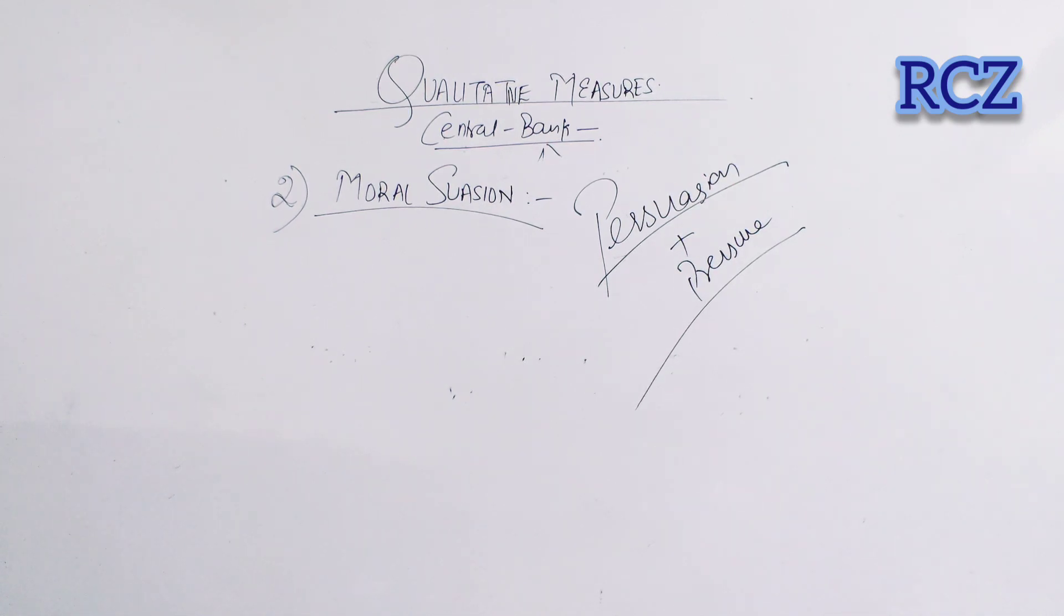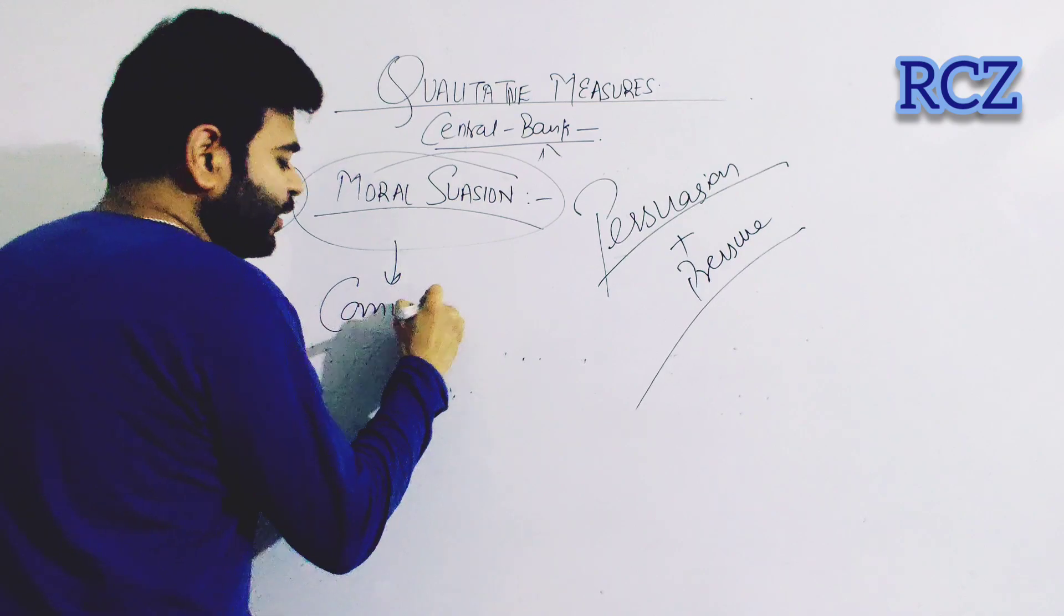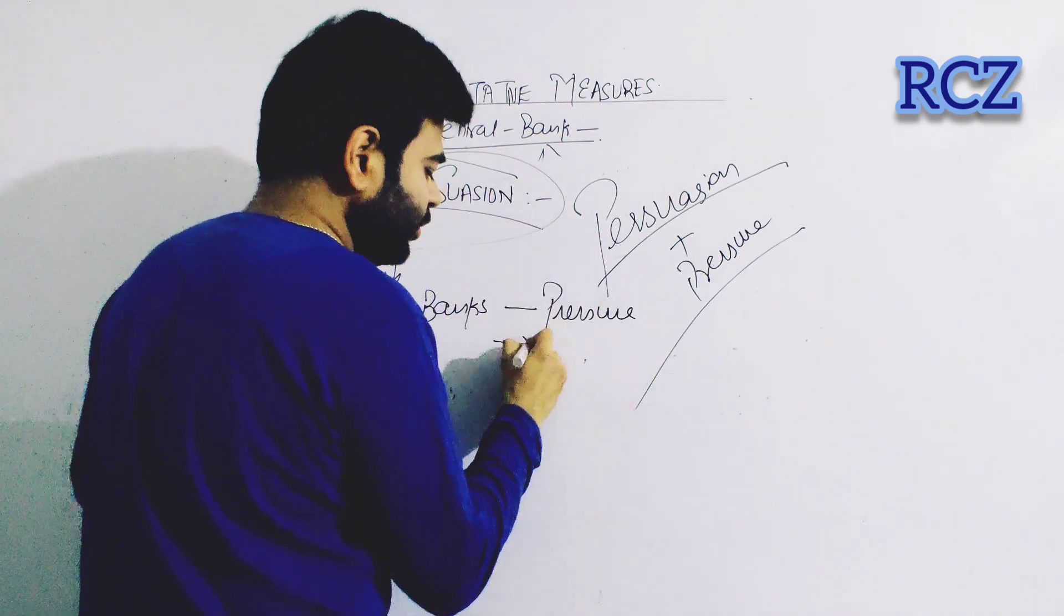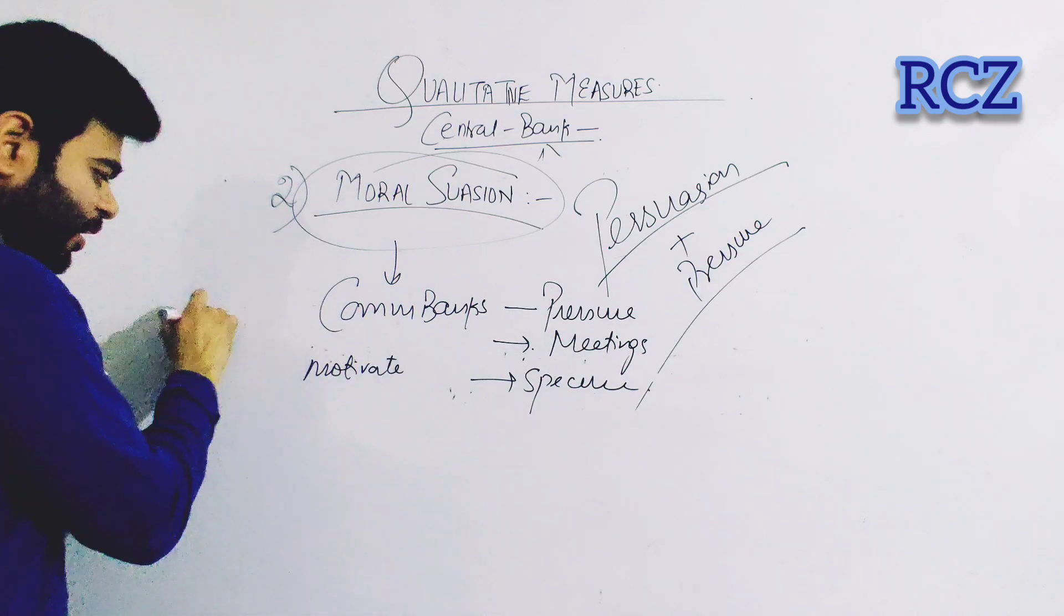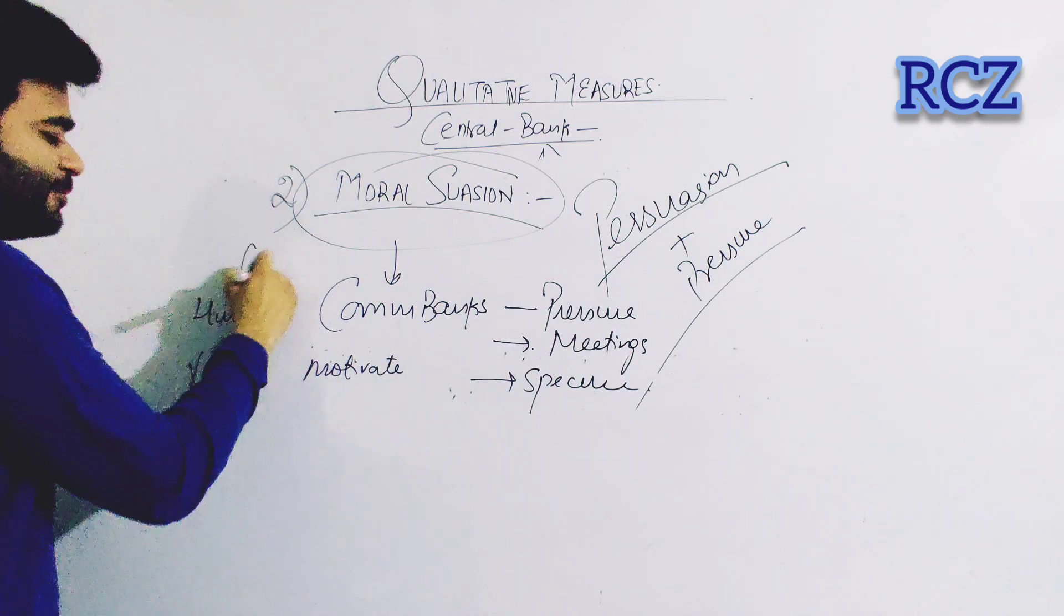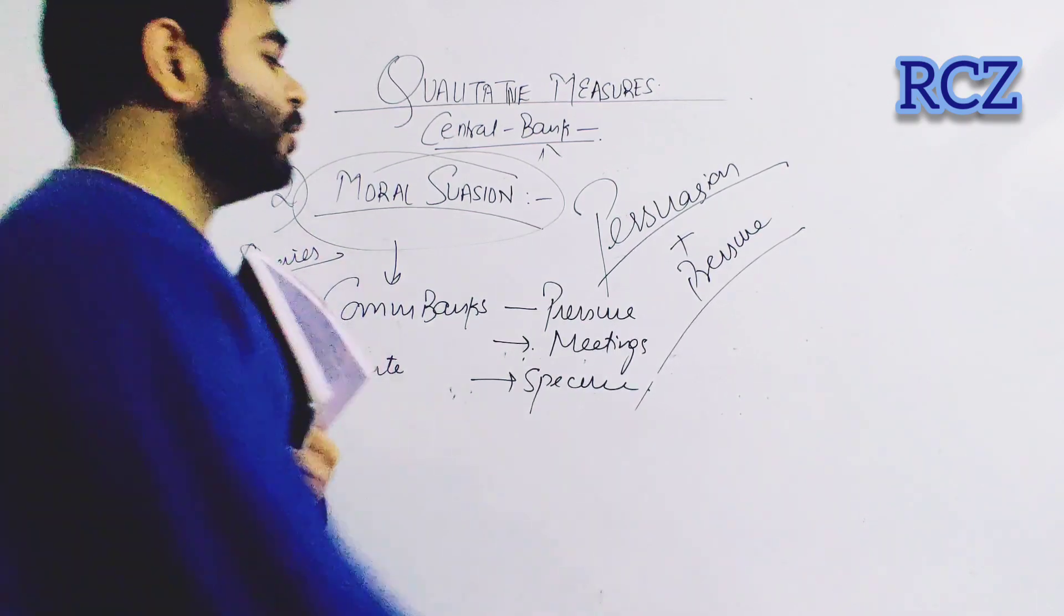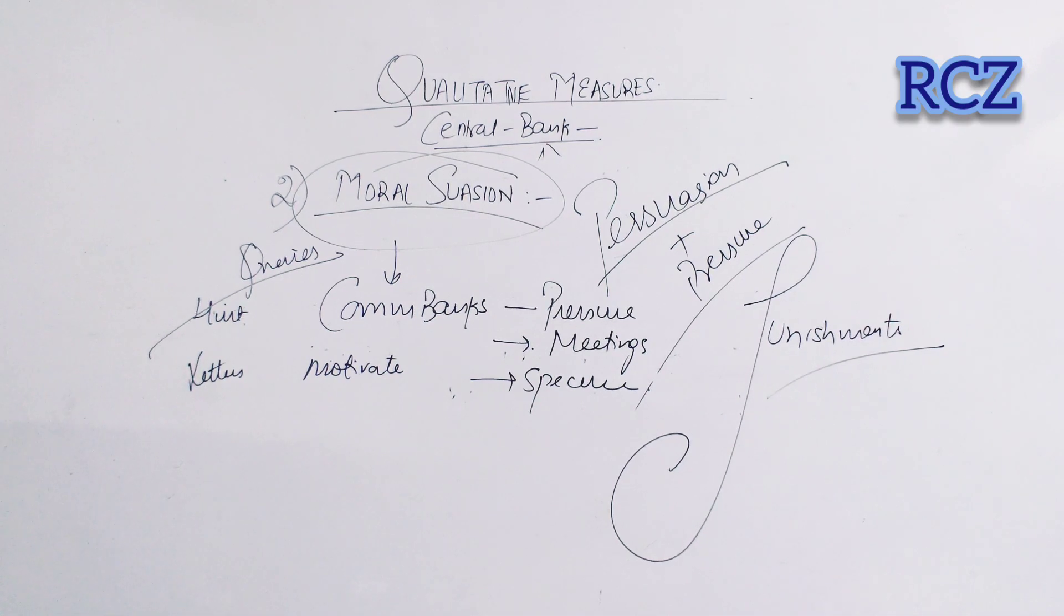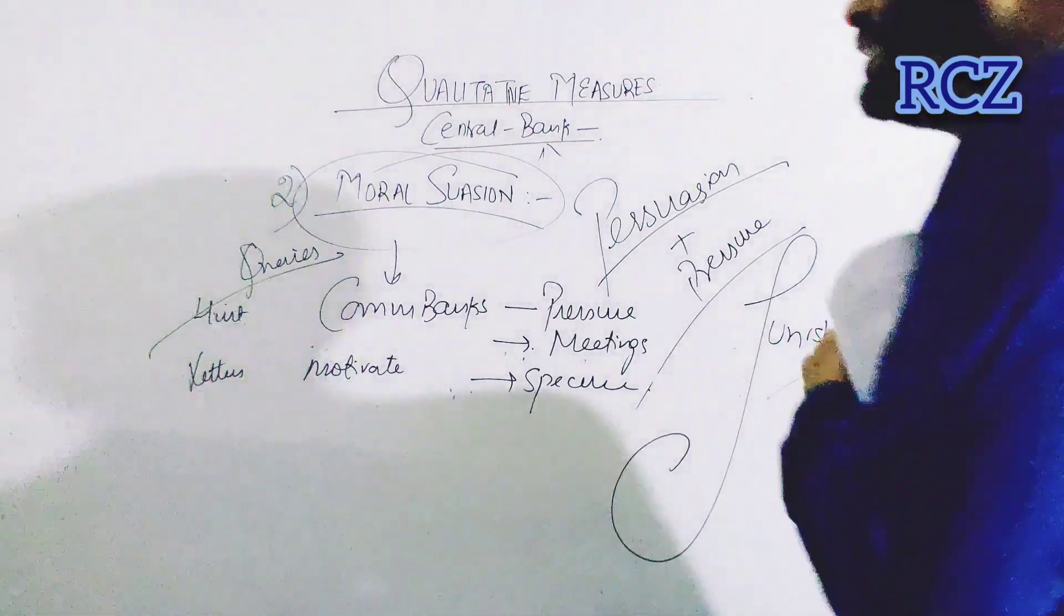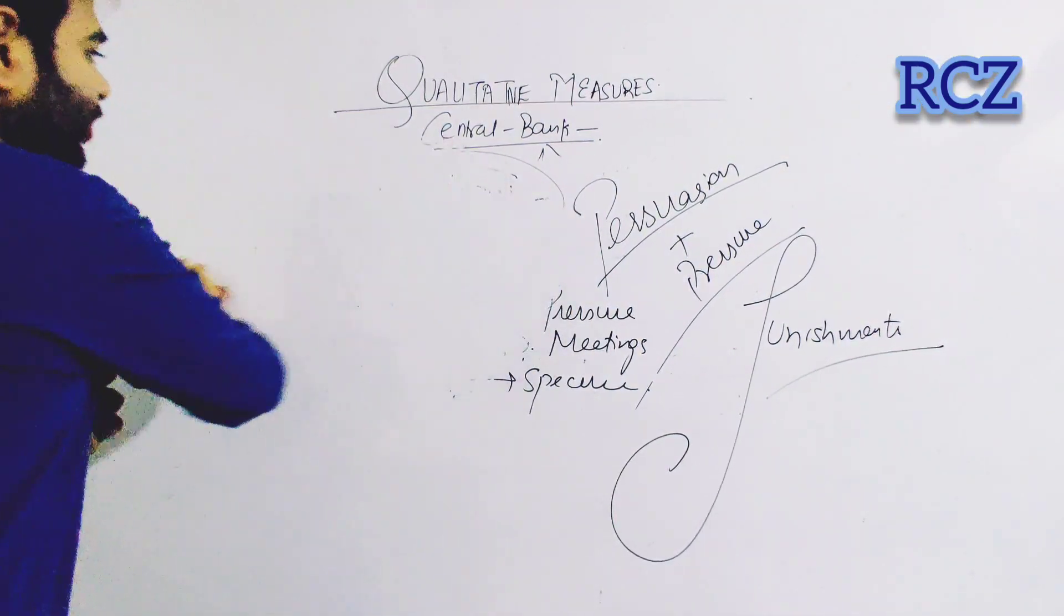Letters, speeches, hints - these are ways to morally support and pressure commercial banks. Speeches to motivate, hints, letters, queries. Very important is selective credit control.